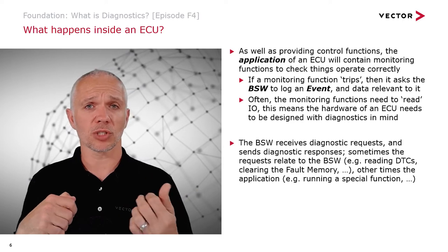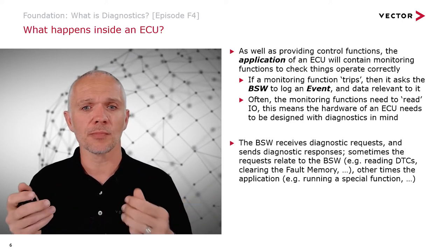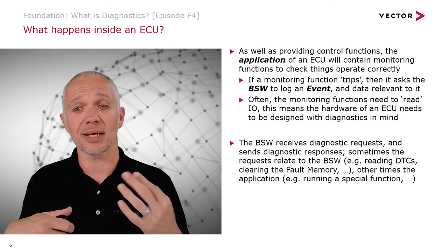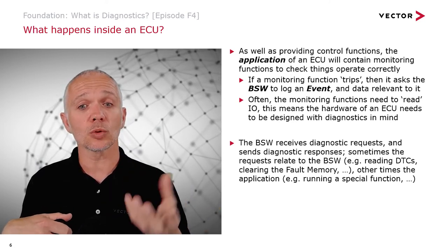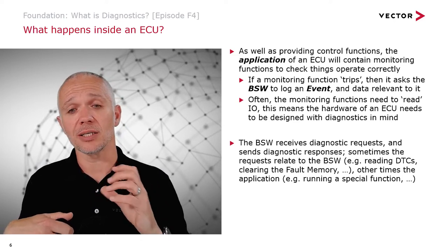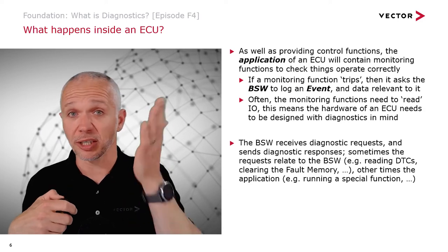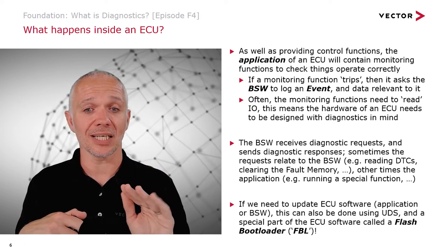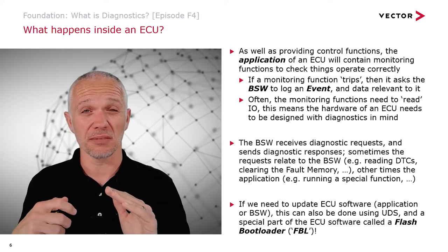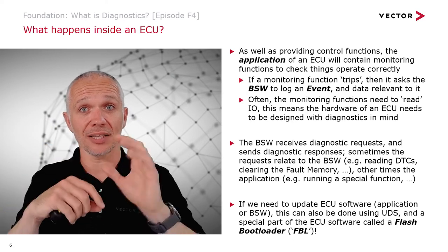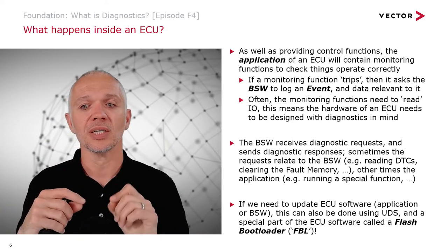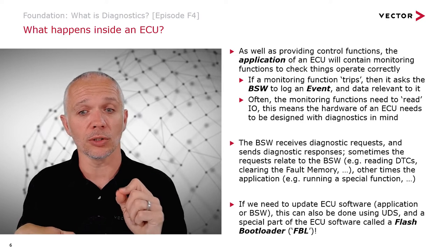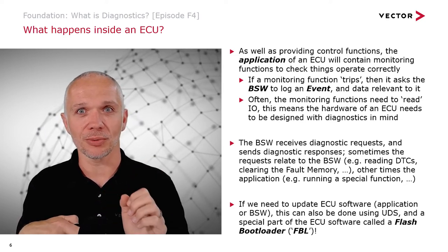The basic software is responsible for receiving requests and sending responses, as network data. Sometimes requests relate to the basic software itself — things like the fault memory are handled within the basic software. Sometimes requests relate to things in the application, such as running a special function. If we need to update ECU software — whether application or basic software — in most ECUs you have to update everything together, not just parts. This is also done using UDS, via a special part of the ECU software called a flash bootloader, or FBL. That's quite advanced and we won't get into it today.